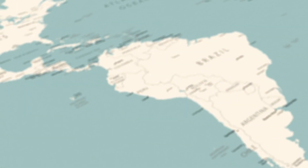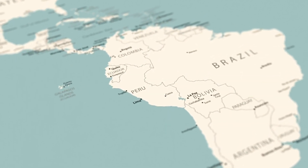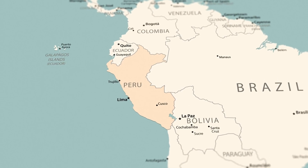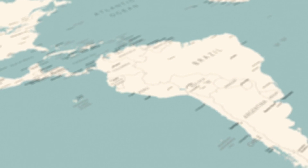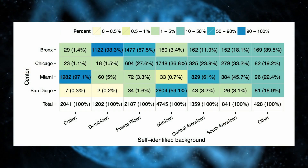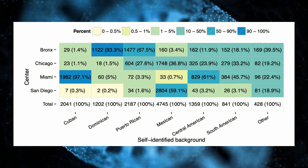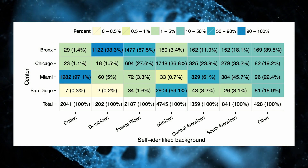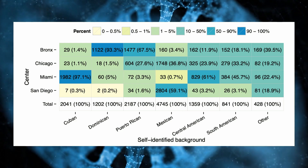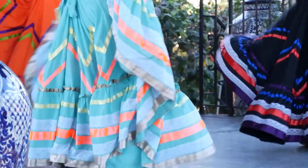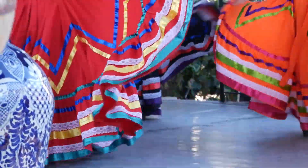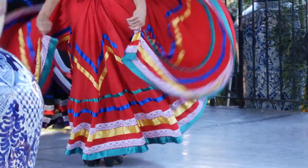Almost all of the participants in the study identified themselves as Hispanic or Latino, and most also specified which country or region their family comes from. Out of the 12,803 people who provided genetic data, the largest groups identified as Mexican, Puerto Rican, Cuban, Dominican, Central American, and South American.